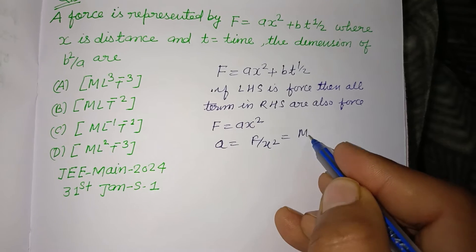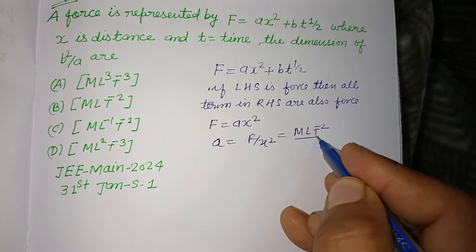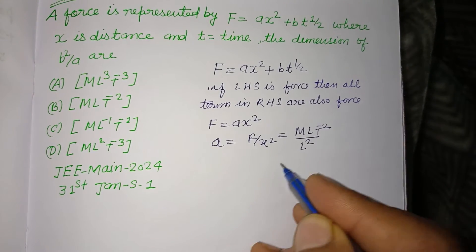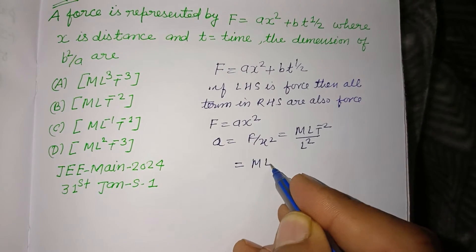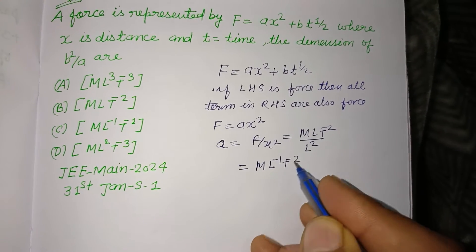F is MLT^(-2) and x is L, so dimension of a is ML^(-1)T^(-2).